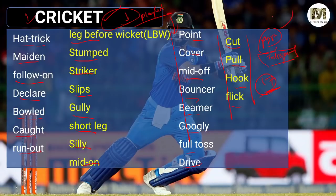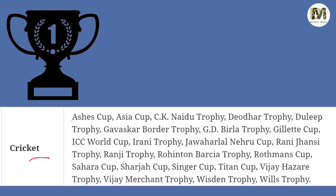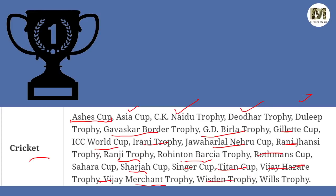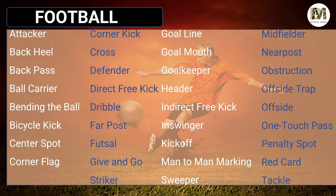Cricket trophies: Ashes Cup, Asia Cup, CK Naidu Trophy, Diodhar Trophy, Dillip Trophy, Gavaskar Bordel Trophy, GD Birla Trophy, Gillette Cup, ICC World Cup, Irani Trophy, Jivala Leharu Cup, Rani Jhansi Trophy, Ranji Trophy, Rohington Barsiya Trophy, Rothmans Cup, Sahara Cup, Shaja Cup, Singer Cup, Titan Cup, Vijay Hazare Trophy, Vijay Merchant Trophy, Wisden Trophy, and Wills Trophy. Do not panic if you don't remember after one go — all candidates face this. You need to revise very frequently.